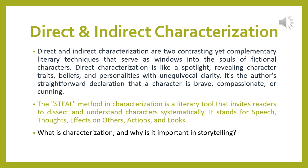In contrast, indirect characterization reveals character traits through action, speech, thoughts, feelings, and interactions with other characters, instead of explicitly stating the characteristics. The author gives you clues and allows readers to draw conclusions about the character's nature. For example, it might show that John is giving his lunch to a homeless person, so you know immediately that he's kind and generous.